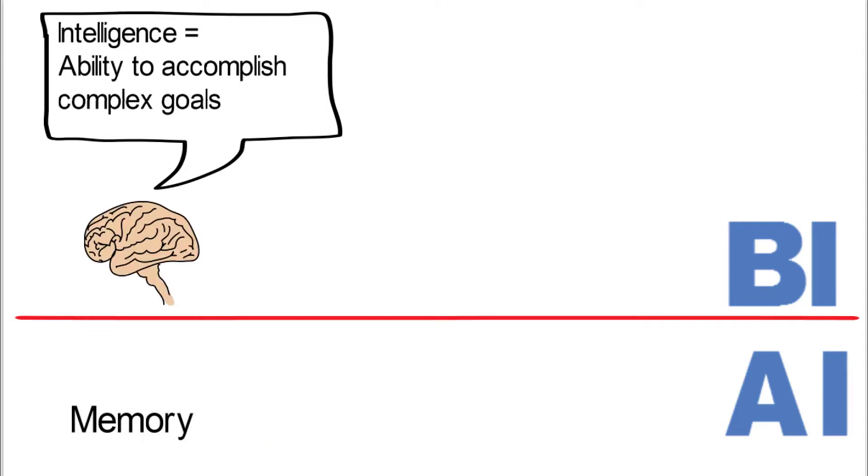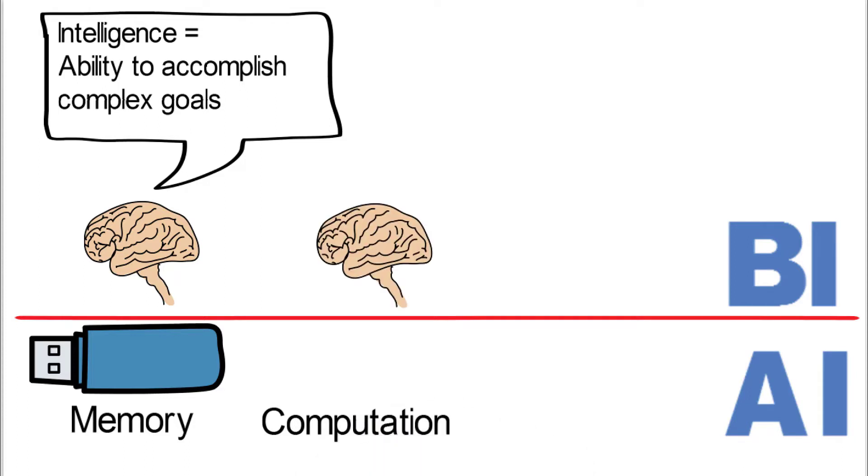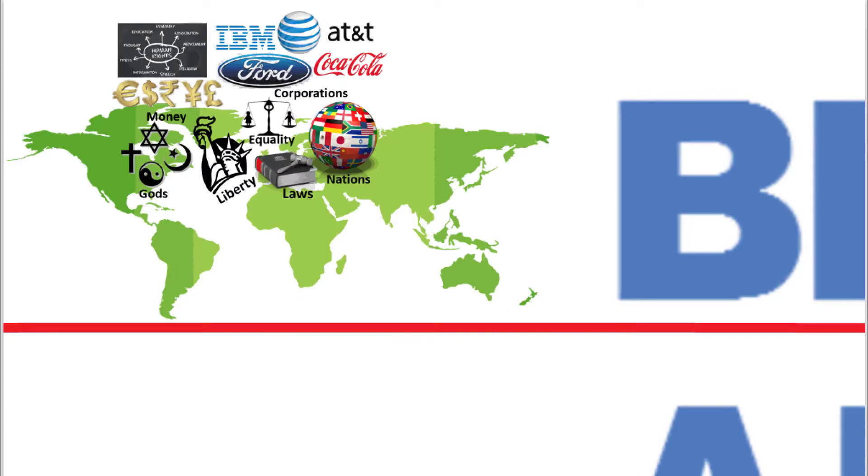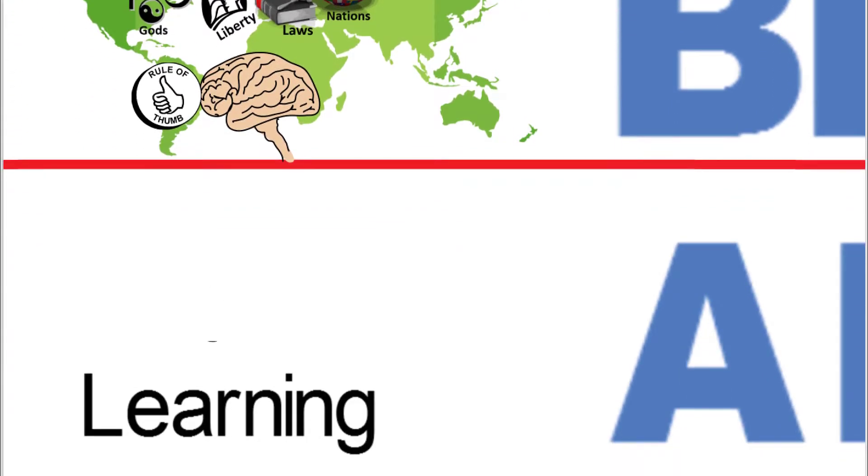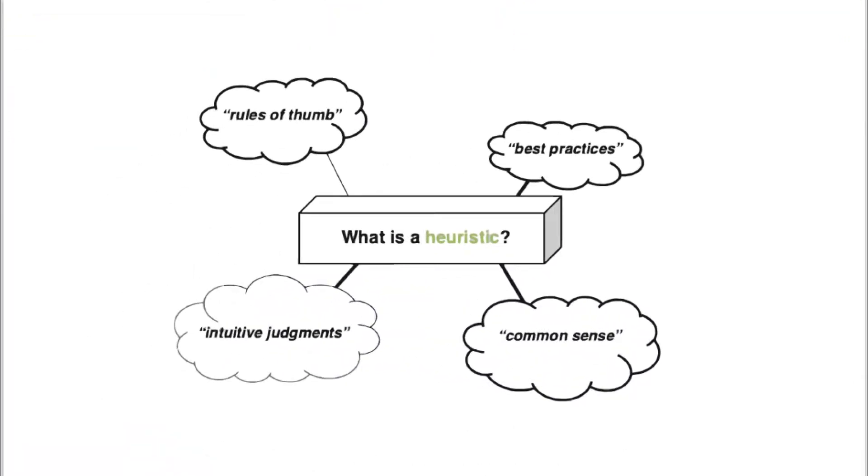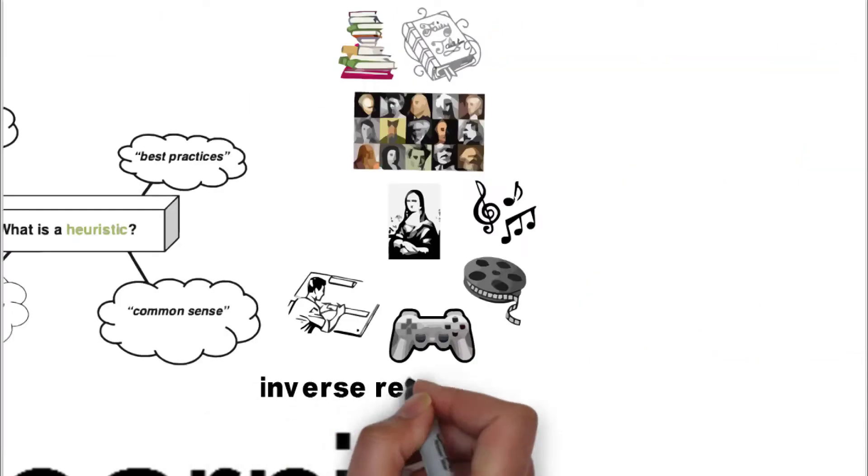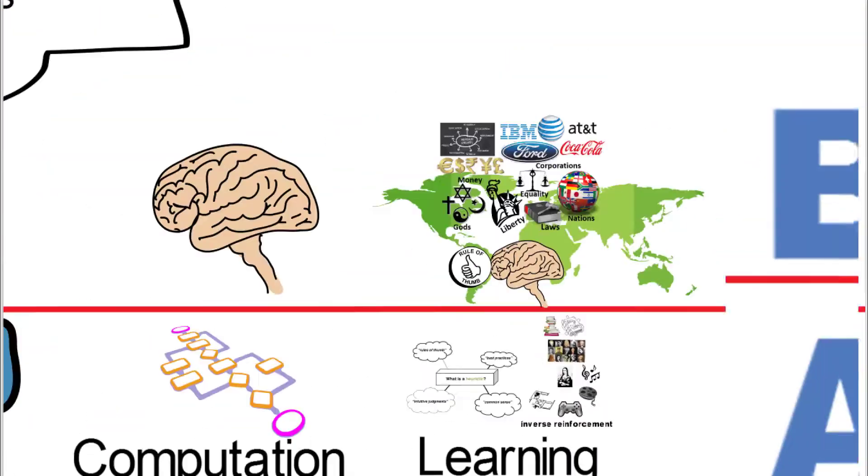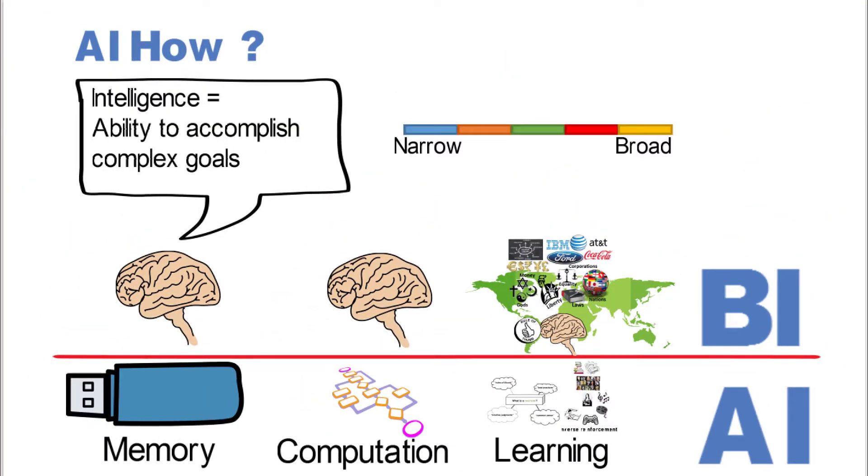He talks about memory - in biological intelligence, memories are in the brain. In AI, artificial intelligence, they have the capability to do memory. The other component is computation, and both have the capability to do computation. The last one is learning. He zeroes in on the fact that biology is learning through the environment, through our myths, through heuristic rules of thumb. Artificial intelligence also has the capability to develop heuristic rules of thumb. But it also uses this process called inverse reinforcements, which looks at our artifacts and learns about us by our artifacts.